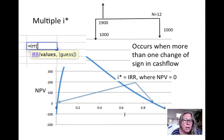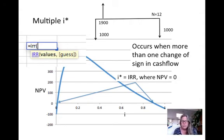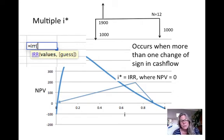In the Excel IRR function, there is an optional "guess" parameter. This recognizes that there might be multiple IRRs, and you can tell Excel where to start looking, since it uses an iterative process to find the internal rate of return. Most people don't use the guess parameter anymore, but it exists to account for the possibility of multiple i-stars.